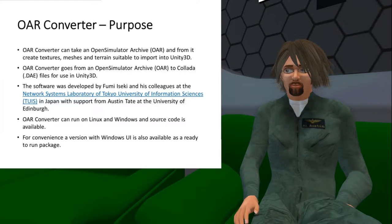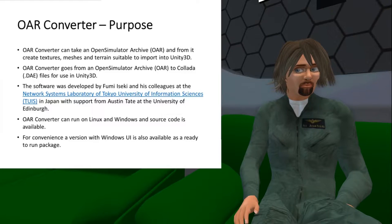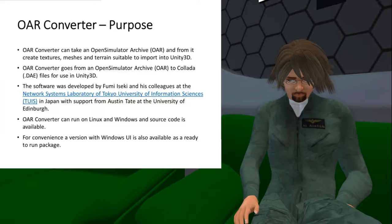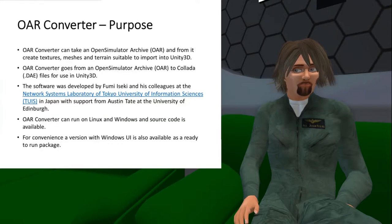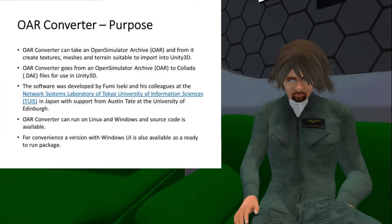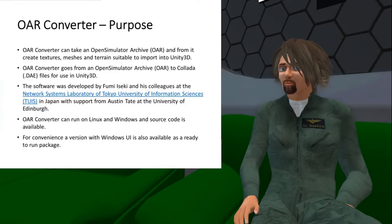With the OAR Converter, we've got an externalized resource — largely a set of XML files and flattened mesh data for all the 3D models — put together into a tar.gzip file, which becomes the input to the tool. In particular, this tool was created to produce Collada .dae files used in Unity 3D, so we could use Unity as a further development environment. That software was developed by Fumikazu Iseki, whose avatar name is Fumihacks. The converter can run on Linux and Windows, with source code made available, and Fumikazu later created a Windows UI for a ready-to-run package.